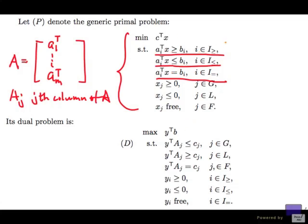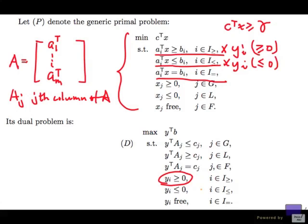And for each of these greater than or equal to inequality, I am going to have a greater than or equal to variable YI. So, remember that we are going to multiply these things by YI, where this is greater than or equal to zero. Because we want, at the end, to get something like this: c transpose x greater than or equal to gamma. Now, for those inequalities that are less than or equal to, we need to multiply them by variables that are non-positive.